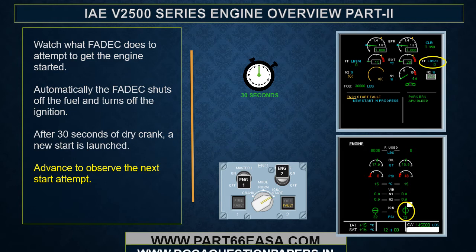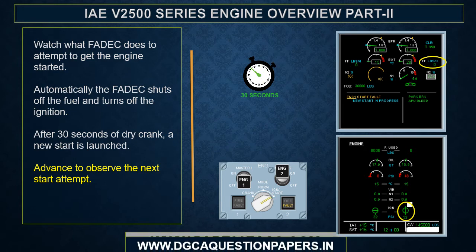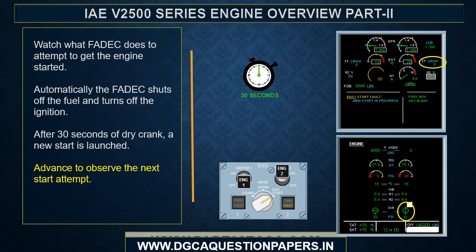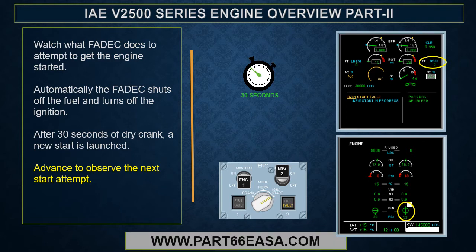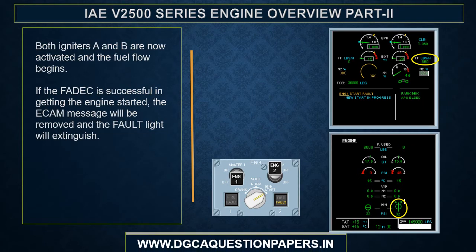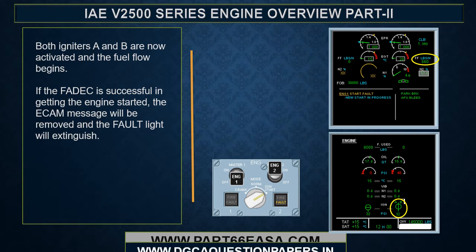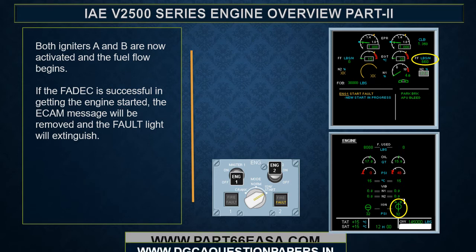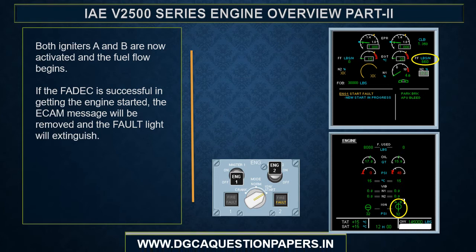Watch what FADEC does to attempt to get the engine started. Automatically, the FADEC shuts off the fuel and turns off the ignition. After 30 seconds of dry crank, a new start is launched. Both igniters A and B are now activated and fuel flow begins. If the FADEC is successful in getting the engine started, the ECAM message will be removed and the fault light will extinguish.